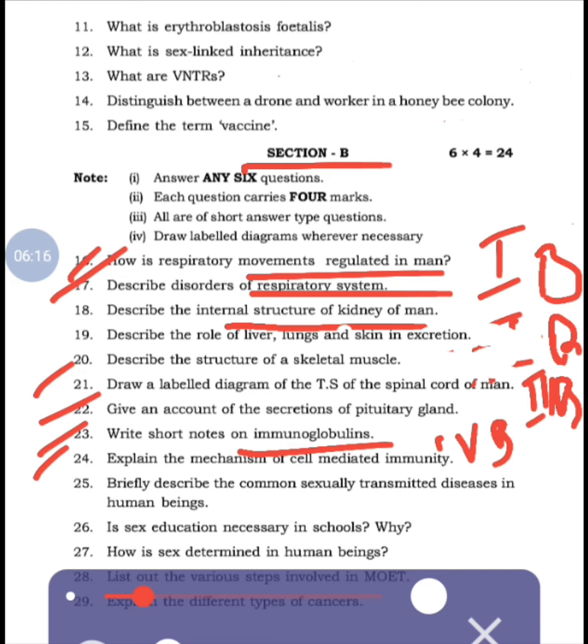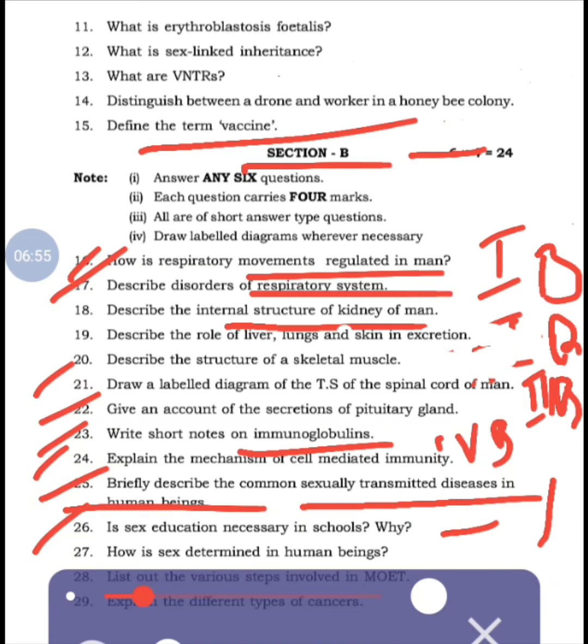Twenty-fourth: Explain the mechanism of cell-mediated immunity - also from immunology chapter, 4B. Twenty-fifth: Briefly describe the common sexually transmitted diseases in human beings - from 5B. In very short answers, previously we thought from 5B definitely one or two, but they did not give. But in Section B, they gave two short answers. Twenty-sixth: Is sex education necessary in schools? Why? - also from 5B. These two questions are from 5B.